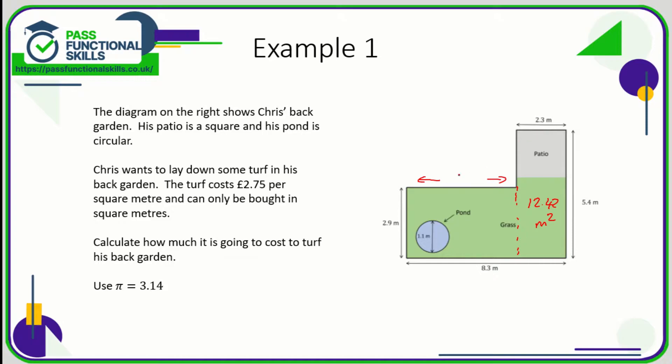So the area of this part of the garden is 6 times 2.9, which is 17.4 square meters. So the whole of the garden is going to be 17.4 plus the 12.42, which comes to 29.82 square meters.